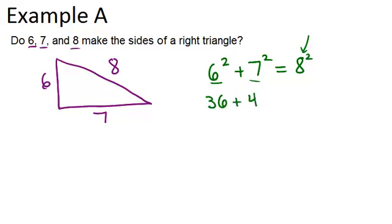We have 36 plus 49, and we're testing if it does equal 64. Well, 36 plus 49 equals 85, and 85 is not equal to 64. Therefore, this is not a right triangle because it doesn't work with the Pythagorean theorem.